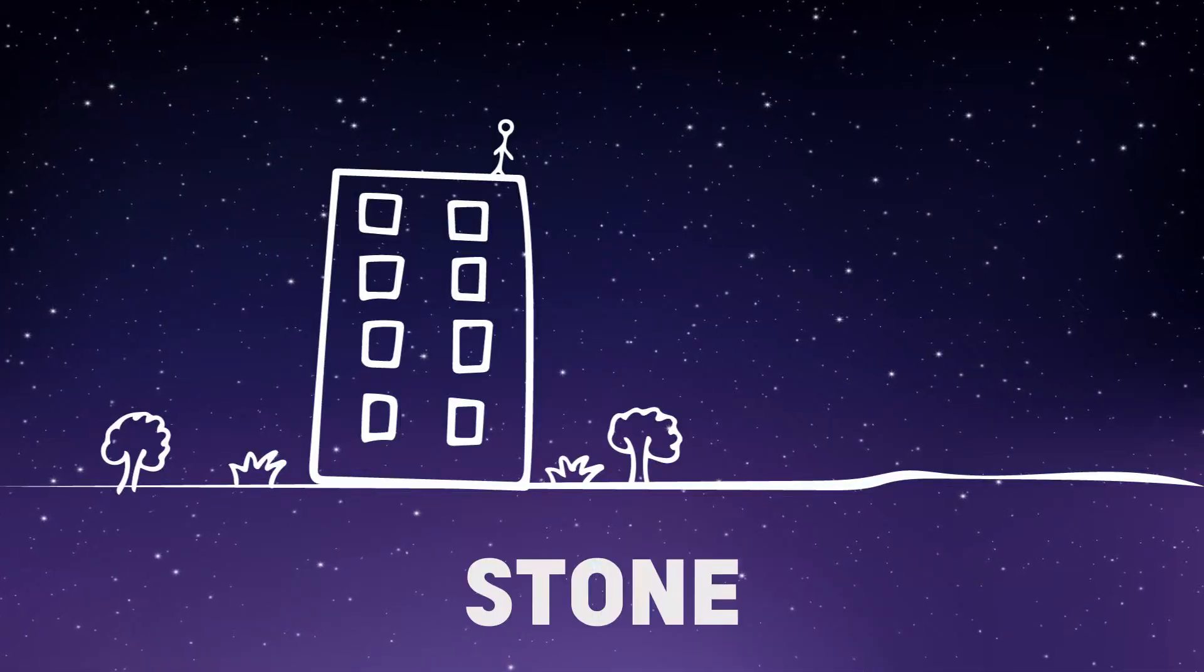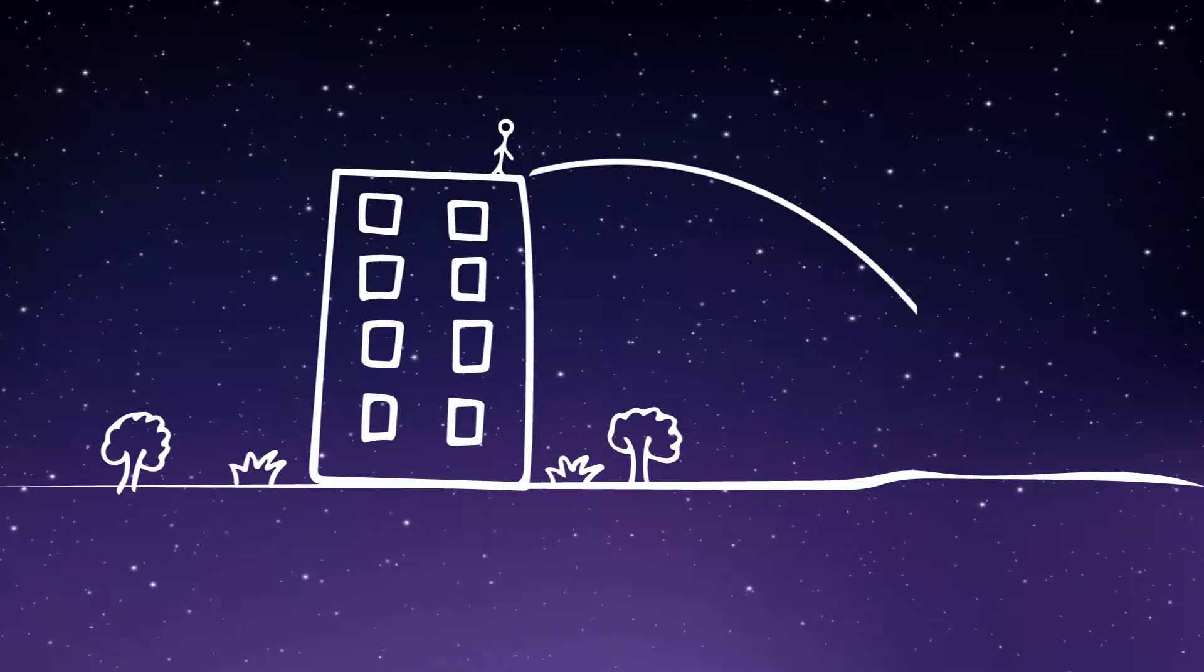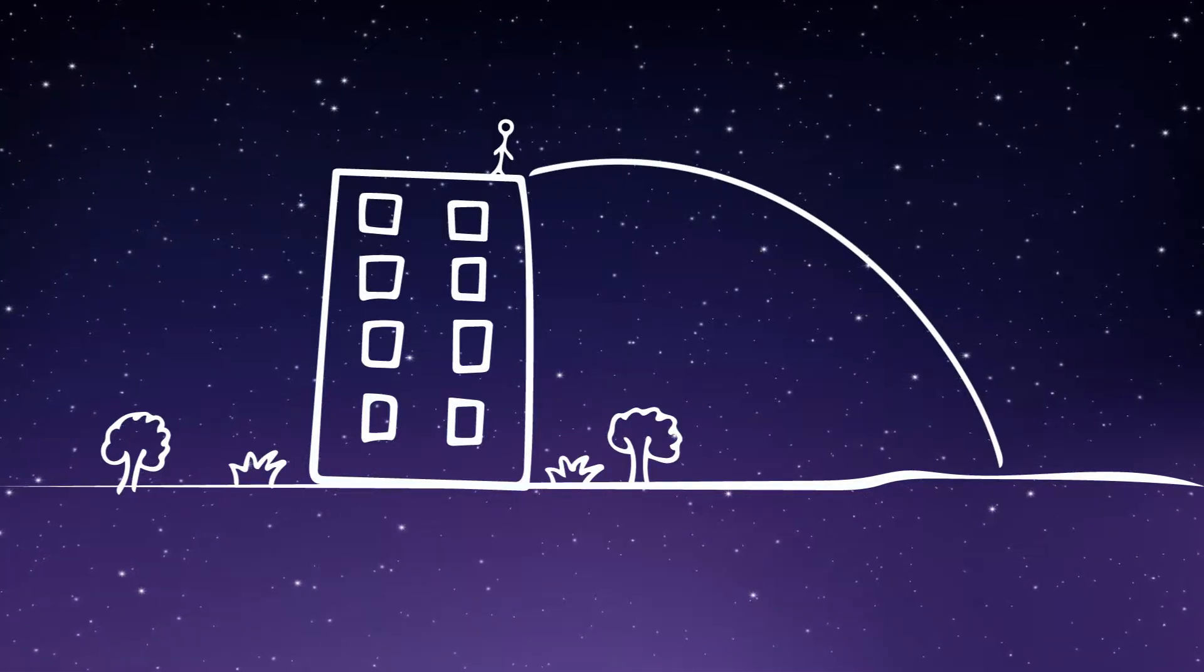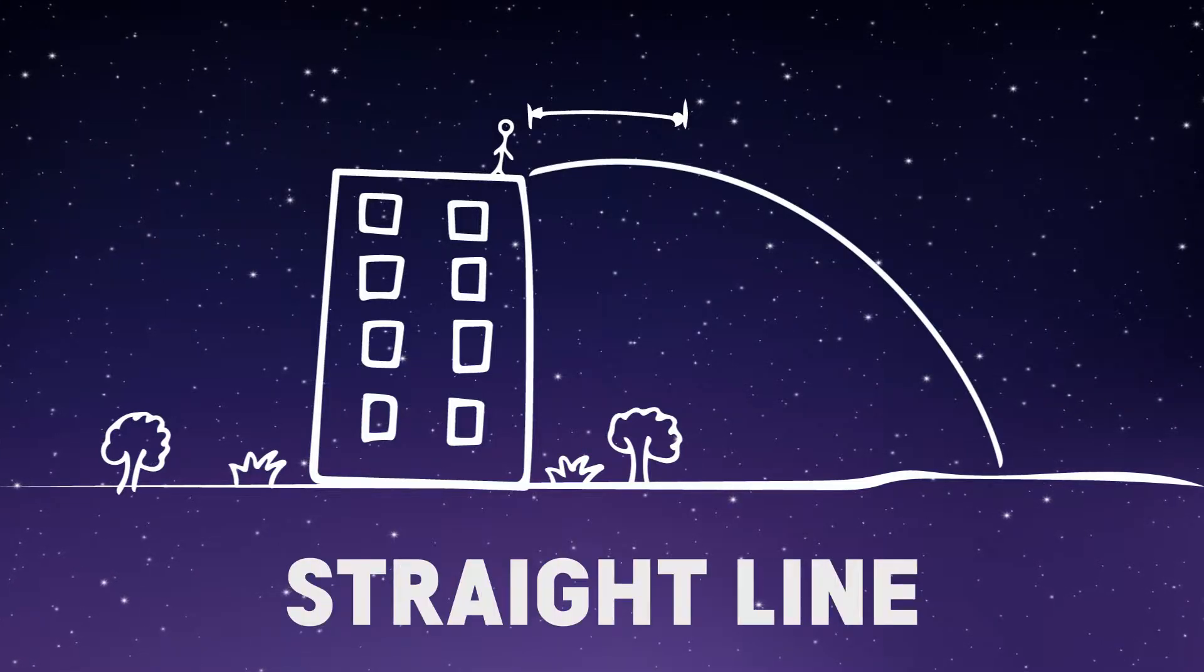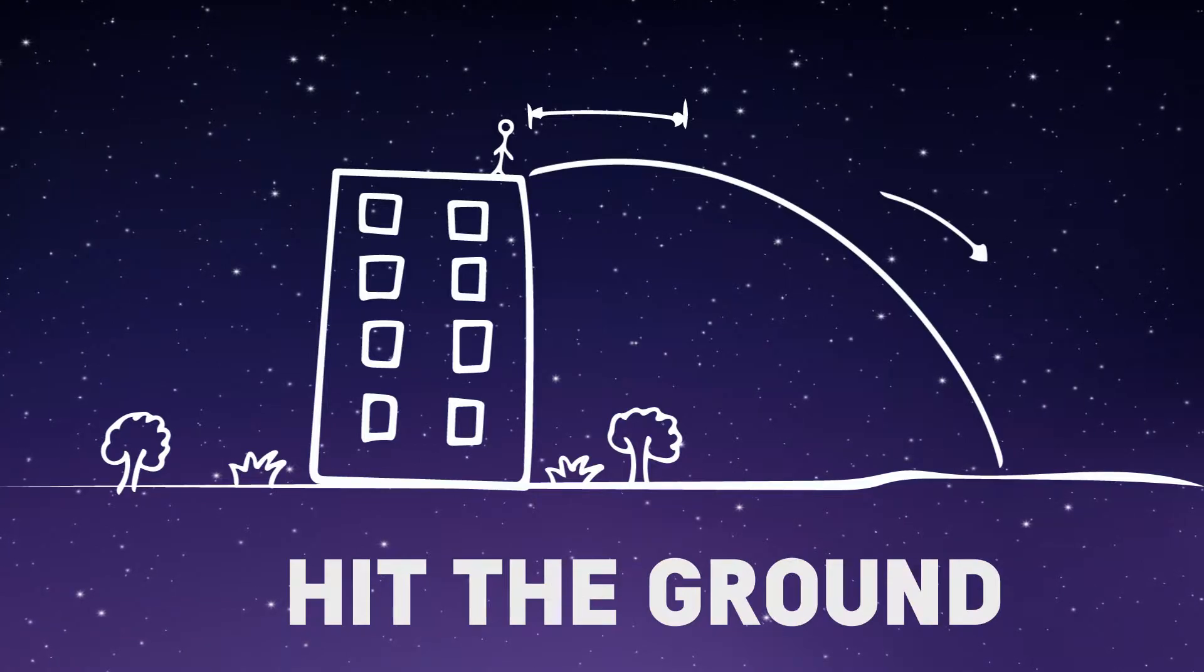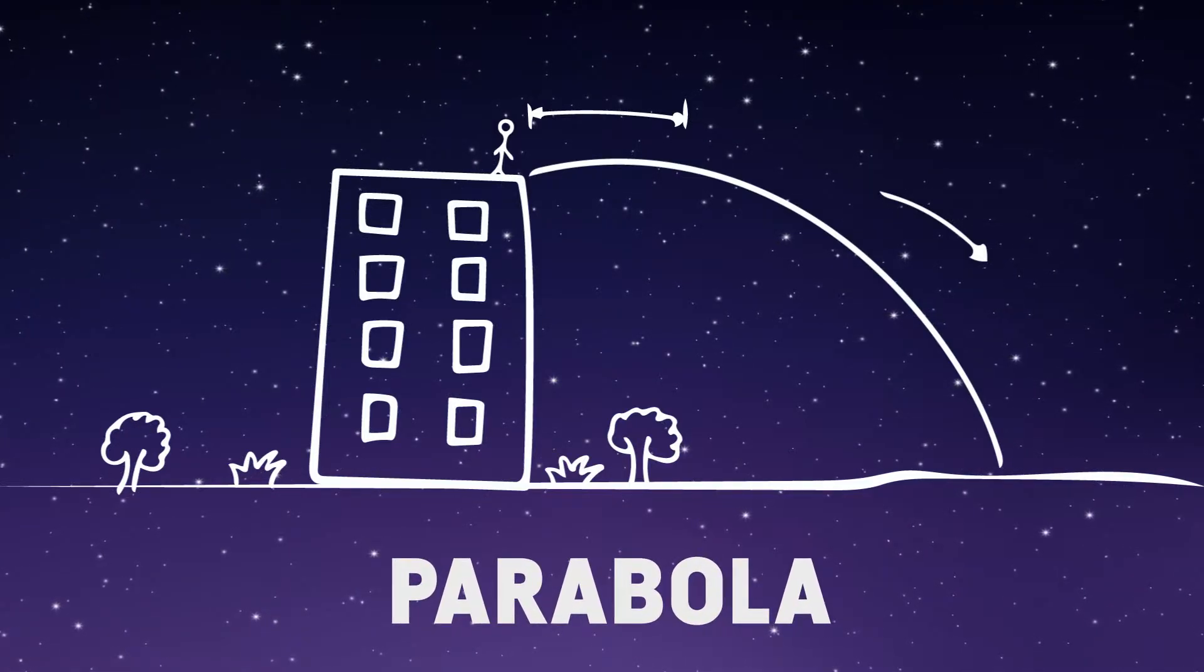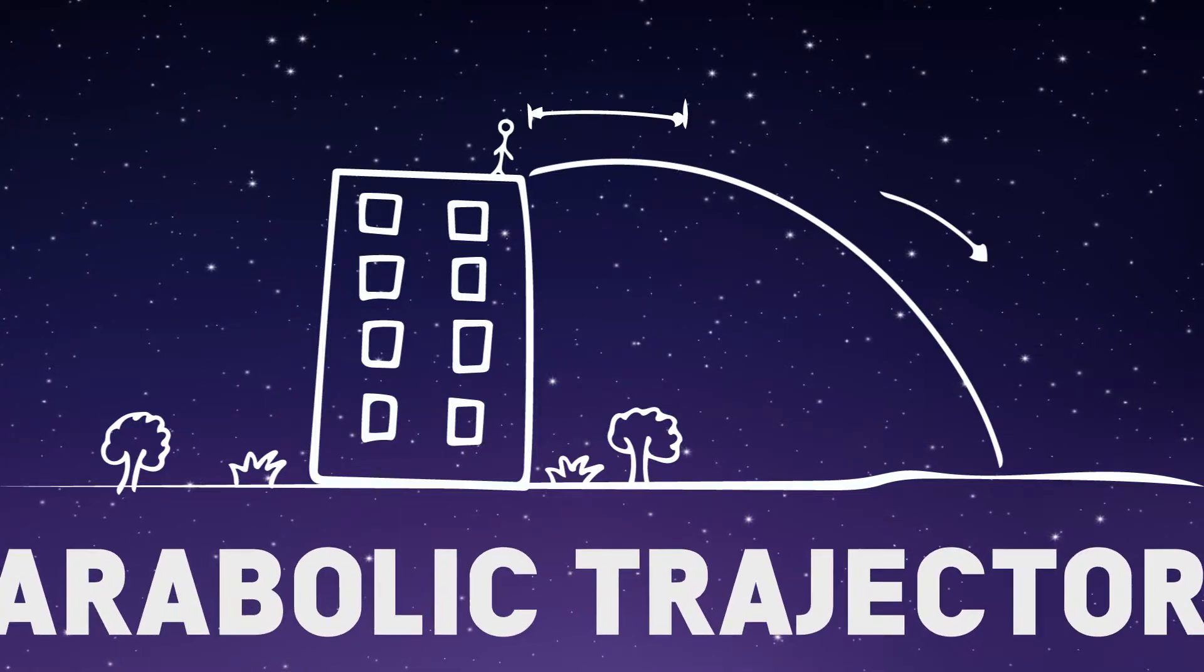If you take a stone and throw it horizontal from a building, it will probably go like this. For some time it will go in a straight line and then it will hit the ground. This curve the stone follows is called a parabola and the trajectory it follows is called parabolic trajectory.